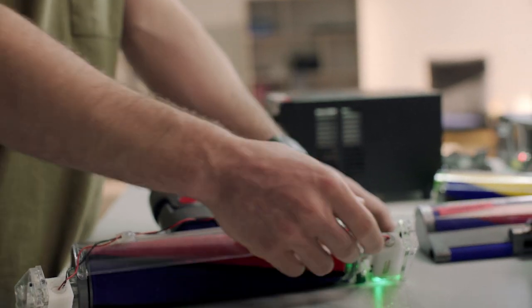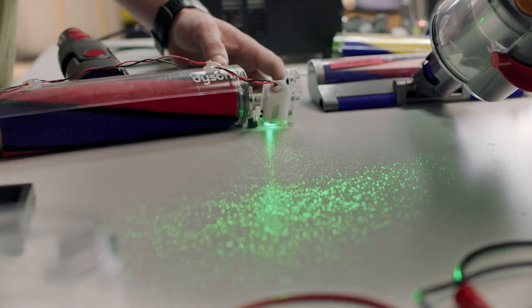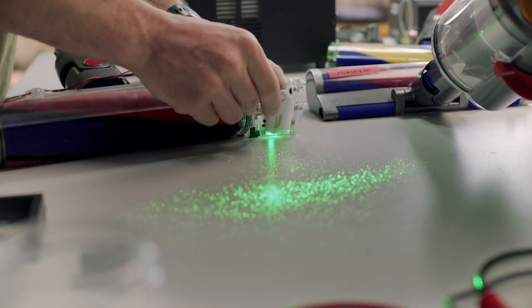We ended up with a height of about 7mm and that created a perfect blade of light that picked out just the dust particles and didn't illuminate the floor surface.